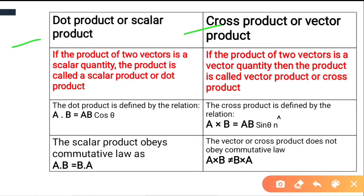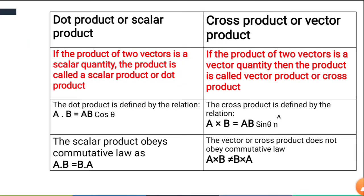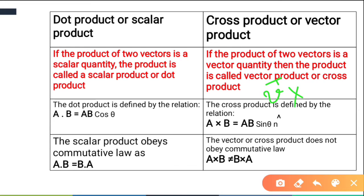If you multiply two vectors and you get a scalar result — like 25, 16, a constant number, or a value with units such as 25 meters or 16 kilometers — that is your scalar product. When you multiply two vectors and get a vector answer, we call it the vector product or cross product.